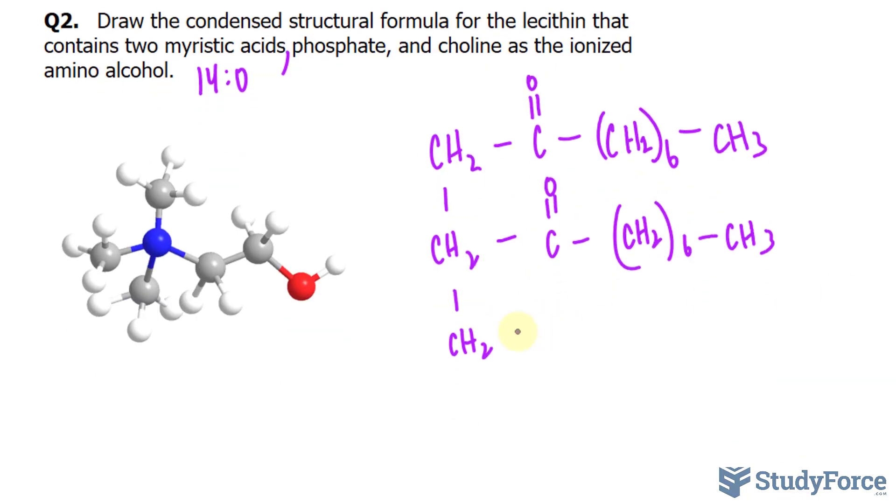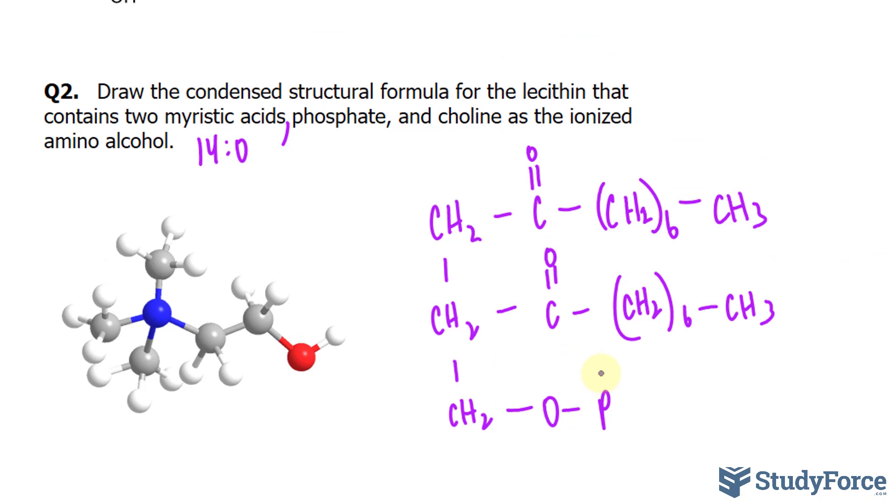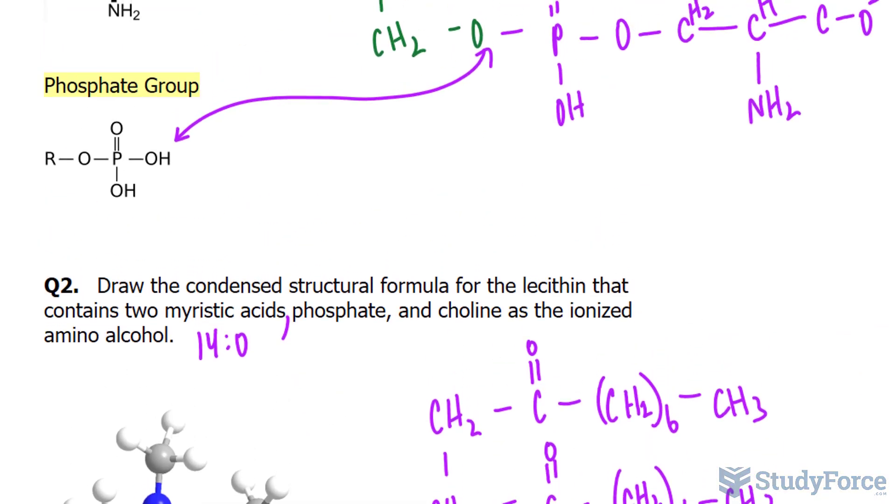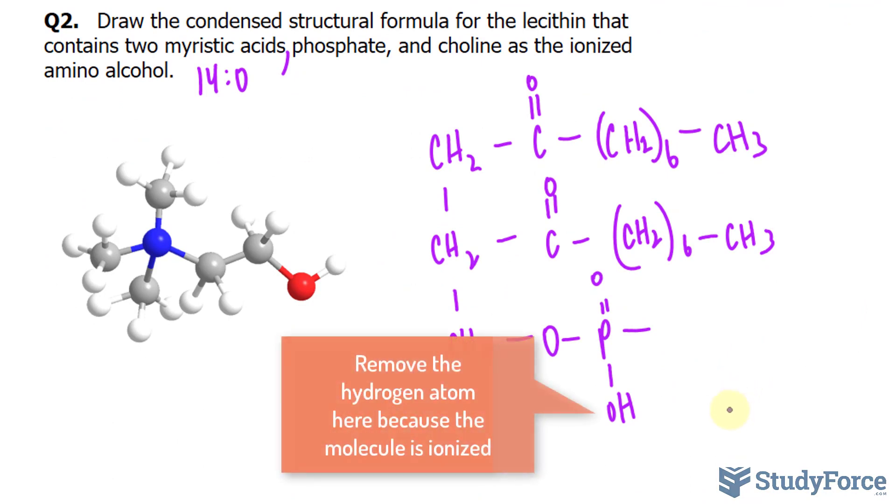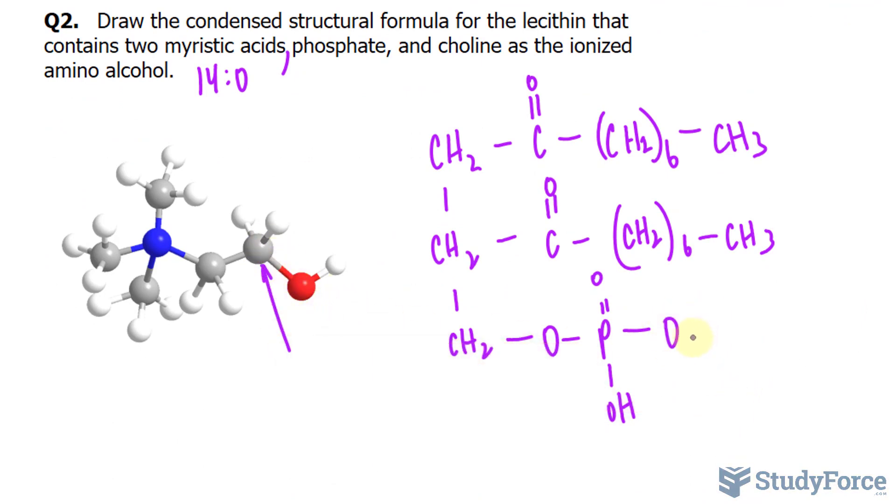And finally, the phosphate part. So that is single bonded to oxygen, and then bonded to phosphate, double bonded to oxygen, OH. And now choline. So the oxygen here will form a bond with this carbon, CH2 times 2.